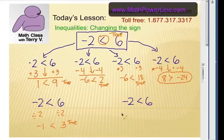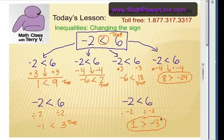One more example. Let's say we divide by a negative 2. Can you guess what's going to happen? If we take negative 2 divided by negative 2, that would be a positive 1. And if we take positive 6 divided by negative 2, that would be a negative 3. Now, 1 is not less than negative 3. In fact, we do have to flip the sign.